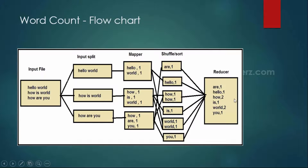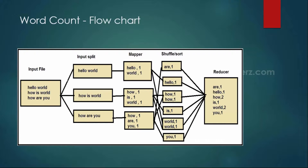In the final reducer, we simply sum it up. For example, 'how' is repeated 2 times so how 1 plus 1 equals 2. 'World' is also repeated twice so world comma 2. With a simple sum function in the reducer, this is the entire word count flow which operates on key-value pairs.